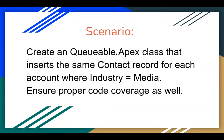The scenario we need to implement for Queueable Apex: we need to create a Queueable Apex class that inserts the same contact record for each account where industry equals to media. We need to pass a collection of accounts where industry equals media, and we will be passing one contact. We need to clone that contact and that same contact will be inserted under each account. This we need to implement with Queueable Apex, and I will also demonstrate how to implement its test class.